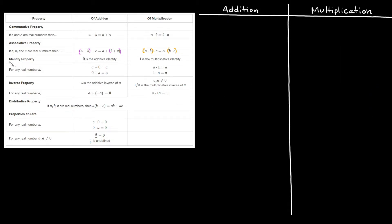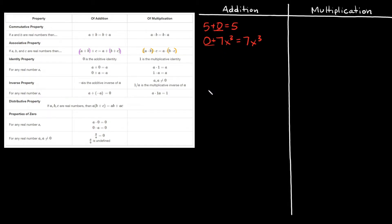Now let's move on to the identity property. The identity property of addition says whenever you add 0 to a number, it doesn't change the answer. So if you had 5 and added 0 to it, your answer would still be 5. Or if you had 0 plus 7x cubed, your answer would simply be 7x cubed. Adding 0 to a number doesn't change it whatsoever. That's why 0 is known as the additive identity.